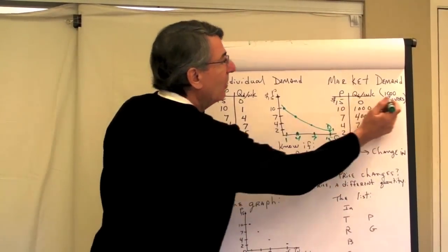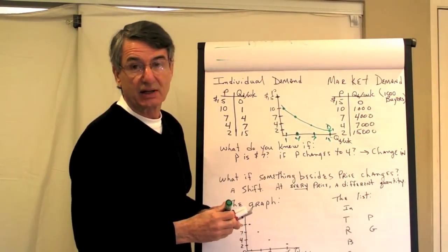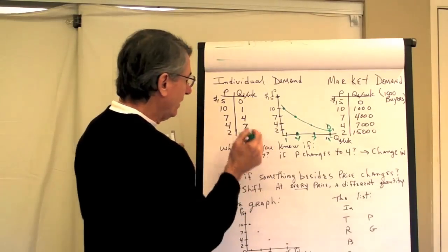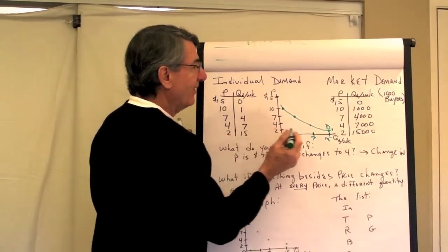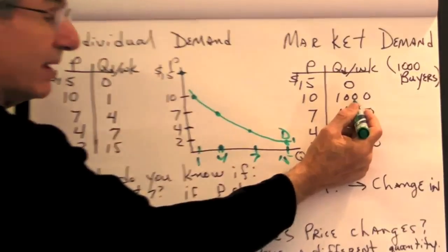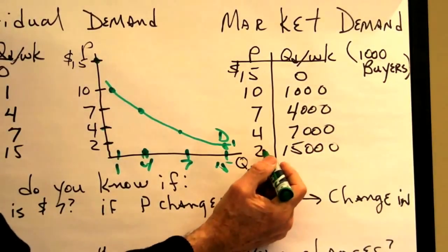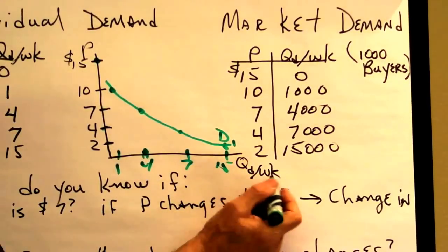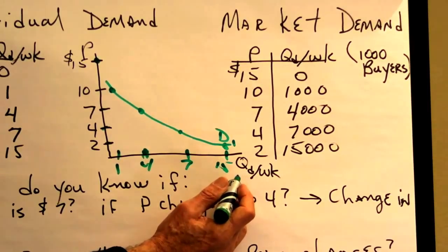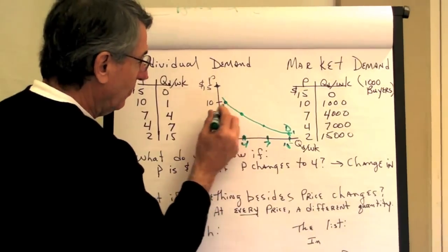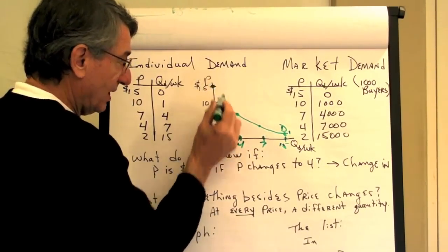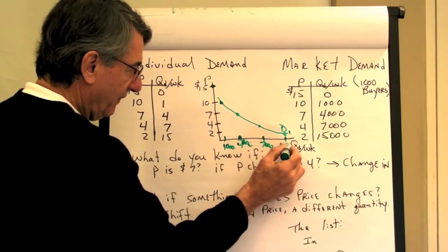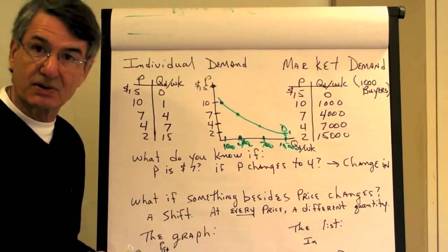What if there were exactly 1,000 buyers identical to me? We would simply add each person's quantity that they want to buy at each possible price. If there were 999 more people like me, then at a price of $15 nobody would buy it; at $10 there would be 1,000 units; at $7 it would be 4,000. Since we put quantity on the horizontal axis, we call this the horizontal sum of all individual demand. So market demand would show 1,000 at $10, 4,000 at $7, 7,000 at $4, and 15,000 at $2.